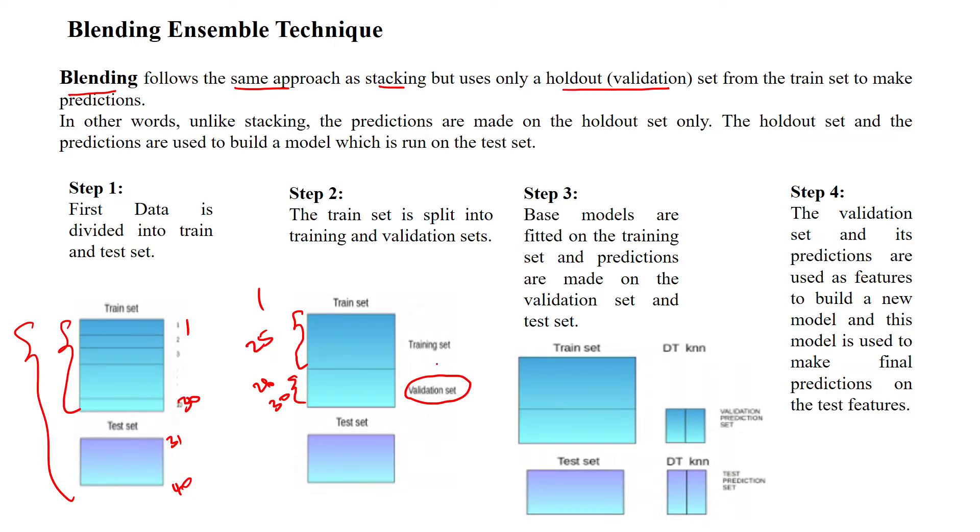So the training samples again, splitted into two data sets, subgroups, one is training data set and another one is validation data set in blending approach. Here, the predictions are made out by using the holdout that is the test data set. I mean, sorry, validation data set.